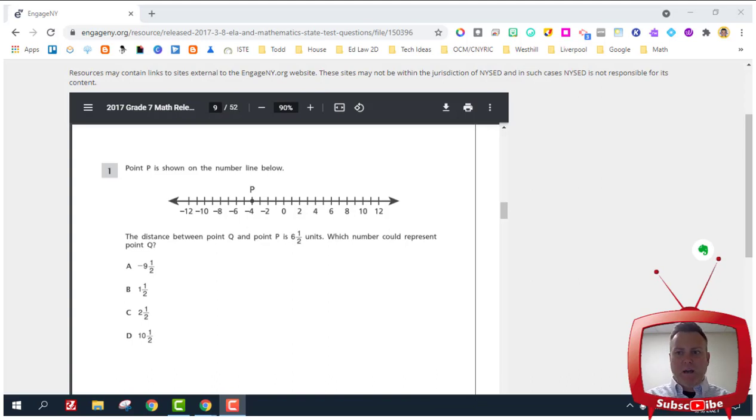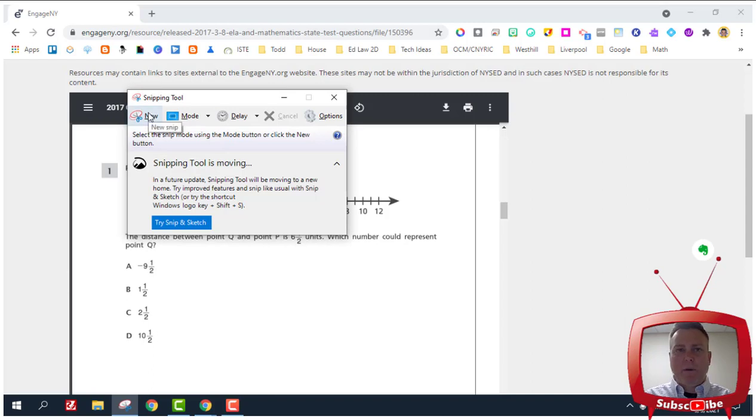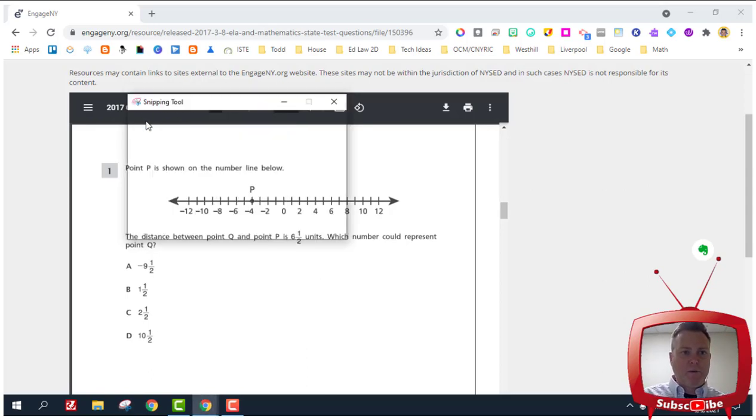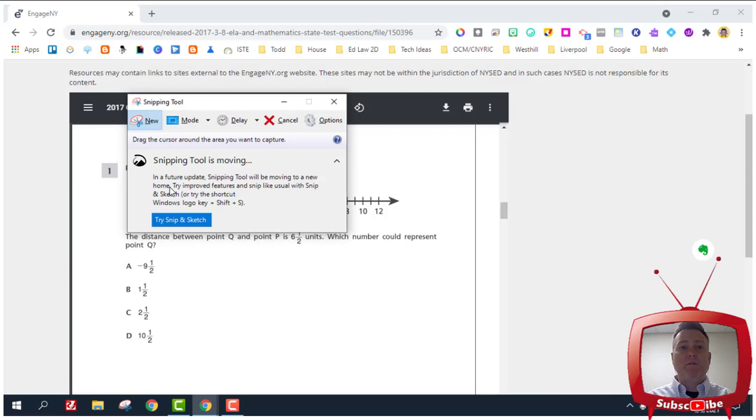Today I went to take a snip of this question by clicking new, just like I've always done. Well, it kept refreshing itself and coming right back here instead of graying or blacking out the screen and allowing me to drag my cursor to take that snip. I kept clicking it until it forced me to read what was going on, and there's an update coming.